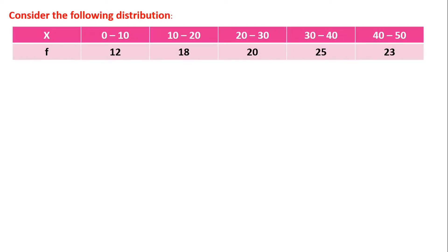Consider the following distribution. The class intervals x are: 0 to 10, 10 to 20, 20 to 30, 30 to 40, 40 to 50. The corresponding frequencies are: 12, 18, 20, 25, 23. Find the mean, median, and mode.